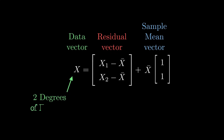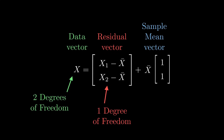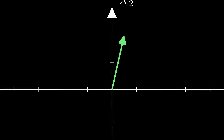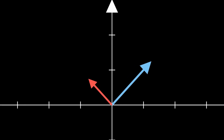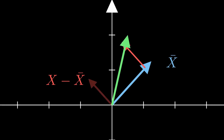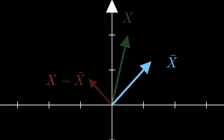What we've done here is to decompose our original random vector into two other random vectors. Our original random vector had two degrees of freedom because it could land anywhere in the 2D plane, but our new vectors do not have two degrees of freedom. In fact, they have split the original two so that each of these only has one degree of freedom. If this is our random data vector x, then what we've done is to split it into two other vectors — the sample mean vector and the vector of residuals. Although the mean could be any number depending on our data, the mean vector is a multiple of the 1,1 vector.